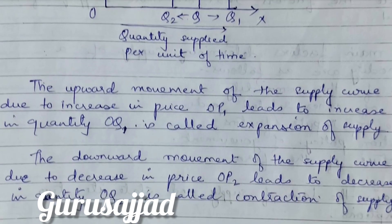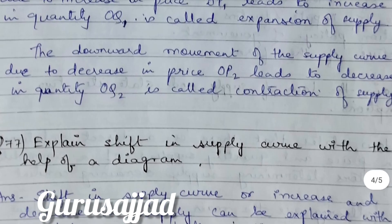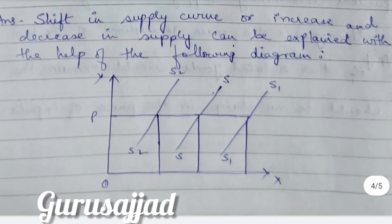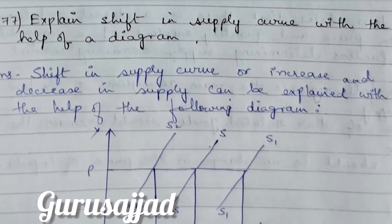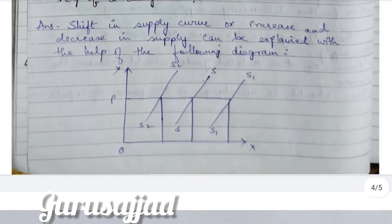The downward movement of the supply curve due to a decrease in price to OP2 leads to a decrease in quantity to OQ2 — this is called contraction of supply. Now, when price is constant and SS is our original supply curve, if other factors besides price change and supply increases, the supply curve will shift to S1. If supply decreases, the supply curve will shift to S2. This is called a shift in the supply curve.